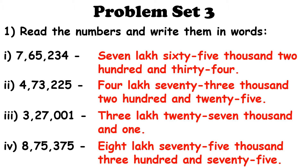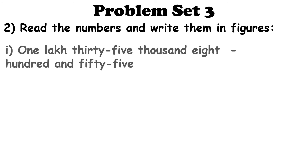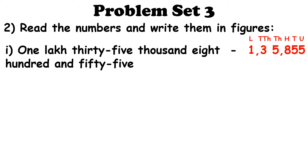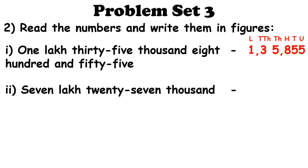The rest of the digits will also be written in the same format. Let us now solve the second sum of Problem Set 3, which is: read the numbers and write them in figures. Our first question is 1 lakh 35,855. We will write the place names and put the digits accordingly. 1 will come under the lakhs place, 3 under ten-thousands, 5 under thousands, 8 under hundreds, 5 under tens, and the last 5 under units. So the number is 1,35,855.